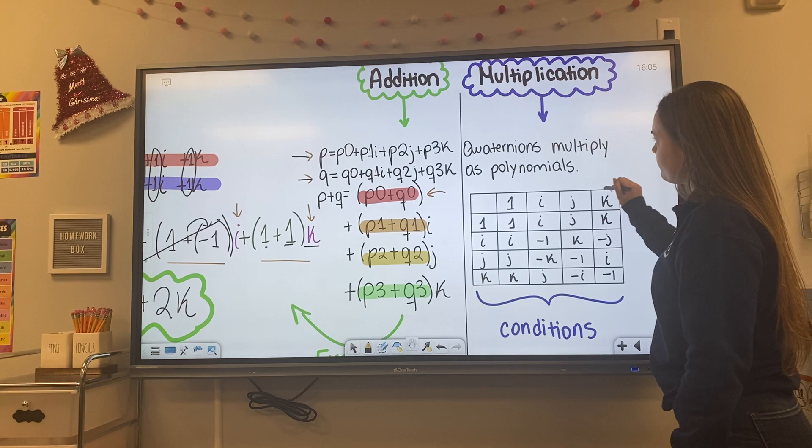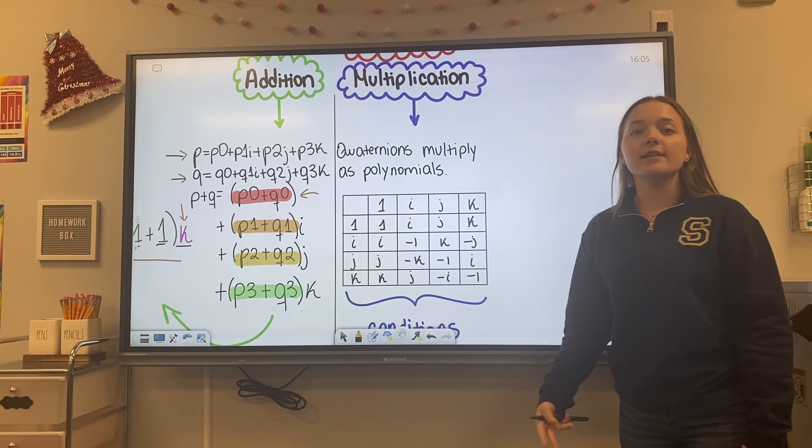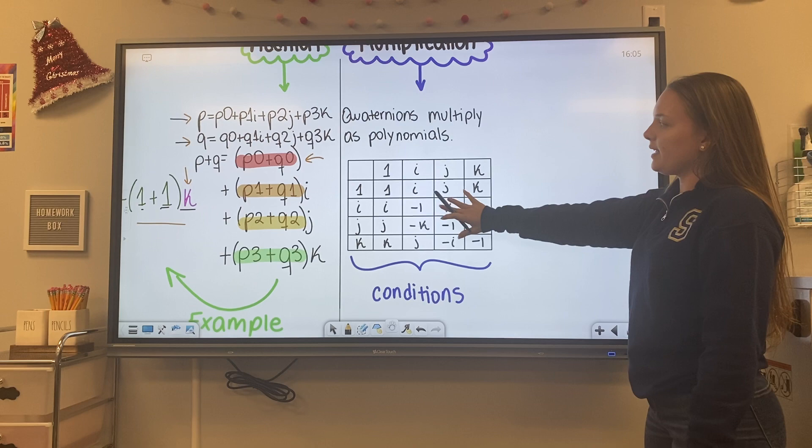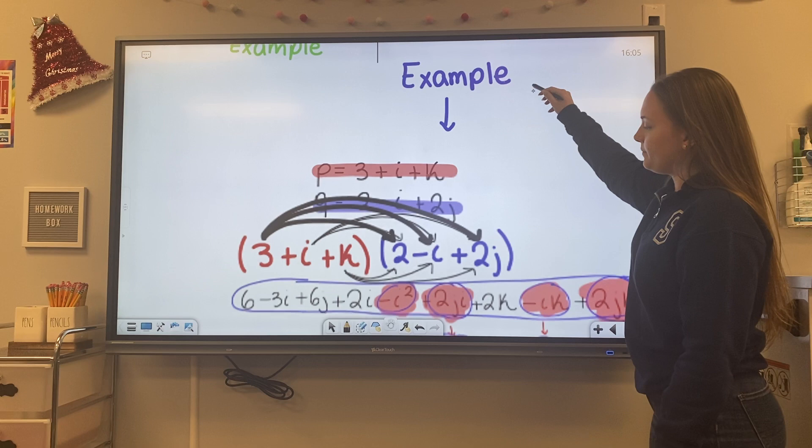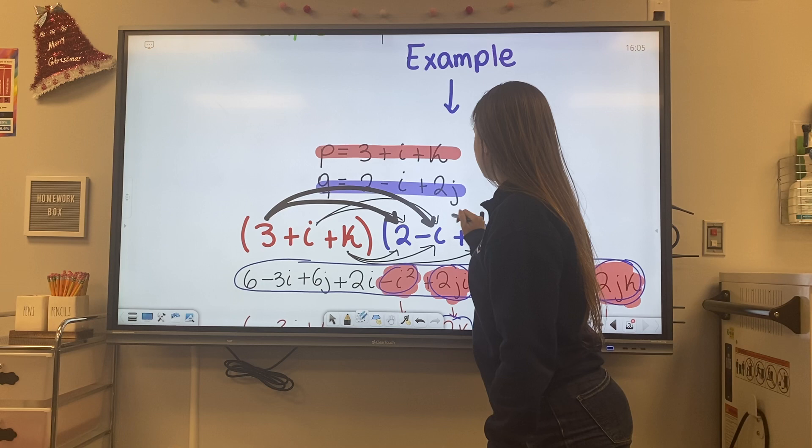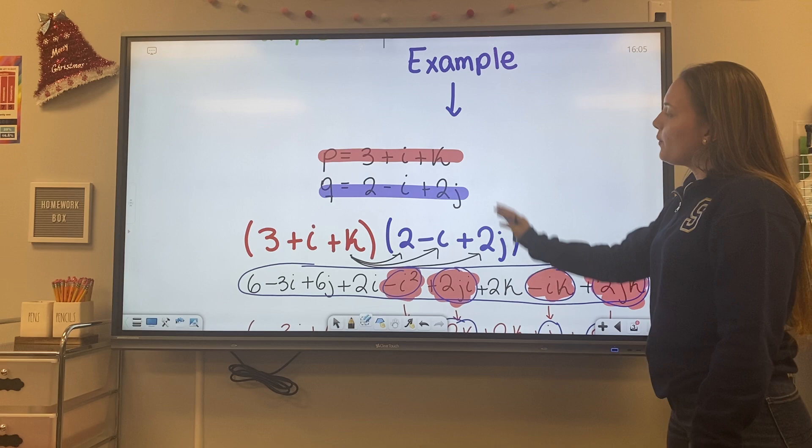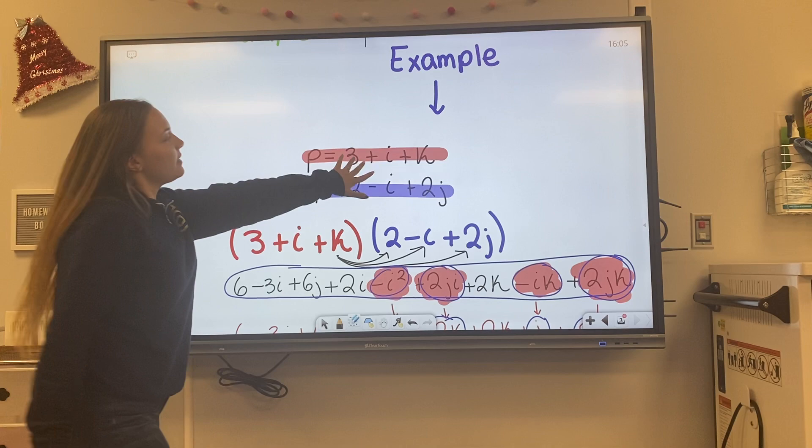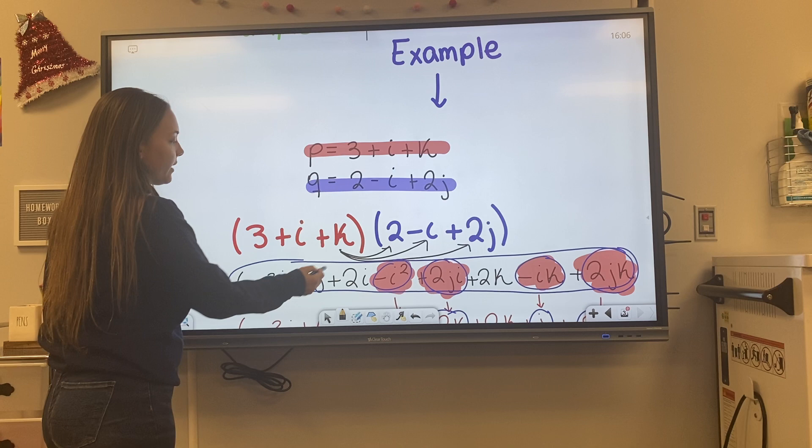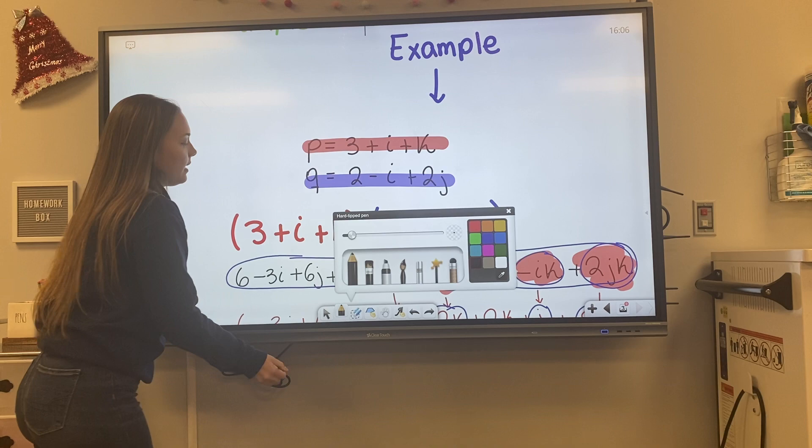Now let's look at our second property which is multiplication. So multiplication for Quaternions works as polynomials. So the only thing that we have to consider is these conditions shown in this table here. So let's go ahead and look at our example.